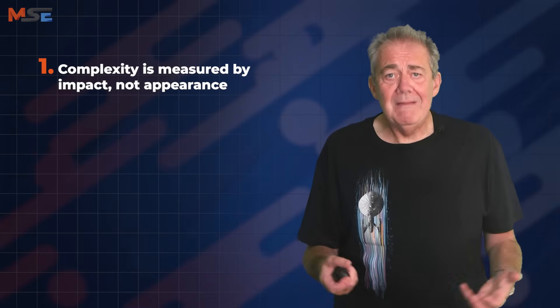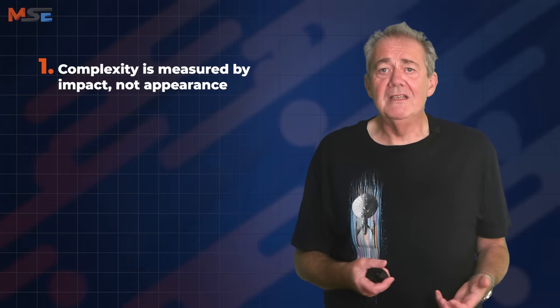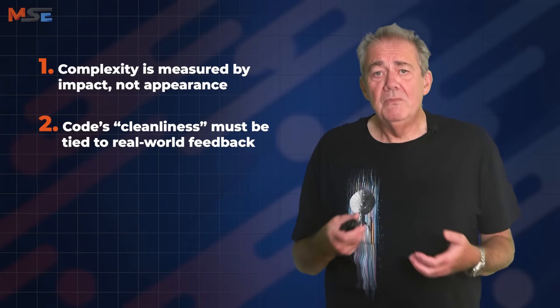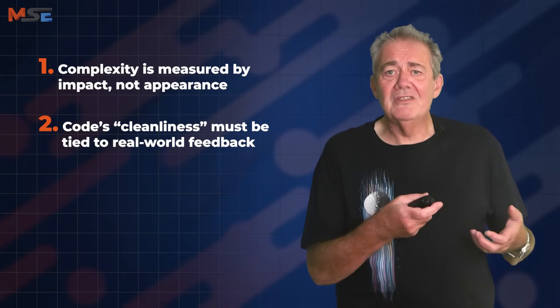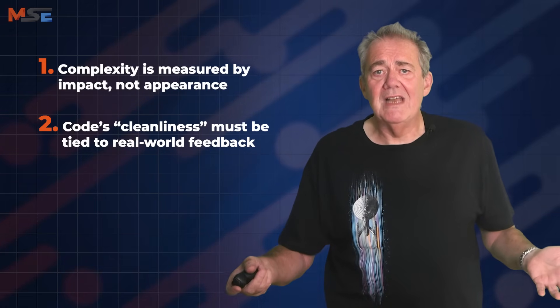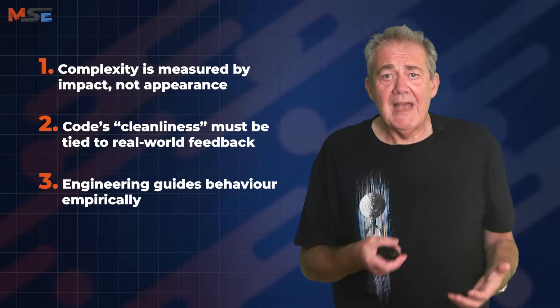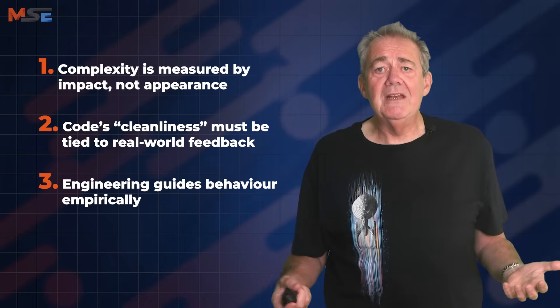Core principles from Modern Software Engineering that clarify the complexity conversation are that complexity is measured by impact, not appearance. A function with 100 lines might be simpler than five layers of indirection — it's usually not, but it might be. Code's cleanliness must be tied to real-world feedback. If it makes tests harder or deploys slower or delays integration, it's not clean in any useful or meaningful sense. Engineering guides behaviour empirically — we don't guess. We measure outcomes: cycle time, defect rate, deployment frequency, recovery speed, comprehension time perhaps.